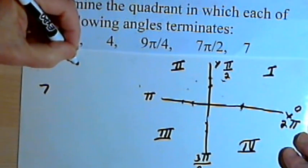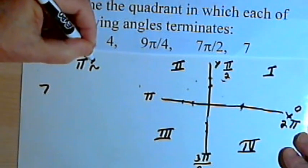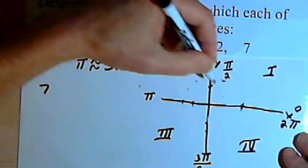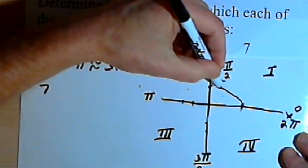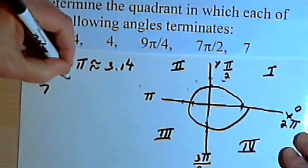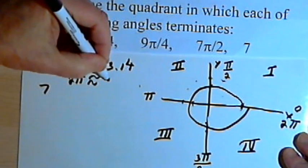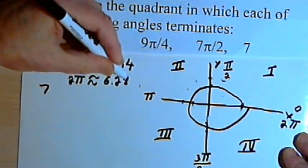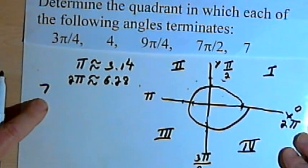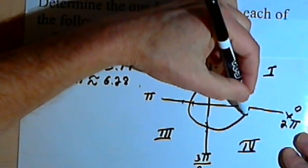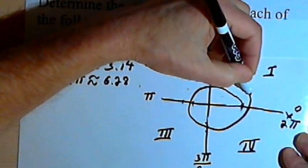So remembering once again that π equals approximately 3.14, if I want a complete circle around, I would go around 2π. So 2π is going to equal approximately 6.28. But I want 7, so I've gone a little further than 6.28. That means I'm going to end up once again in the first quadrant.